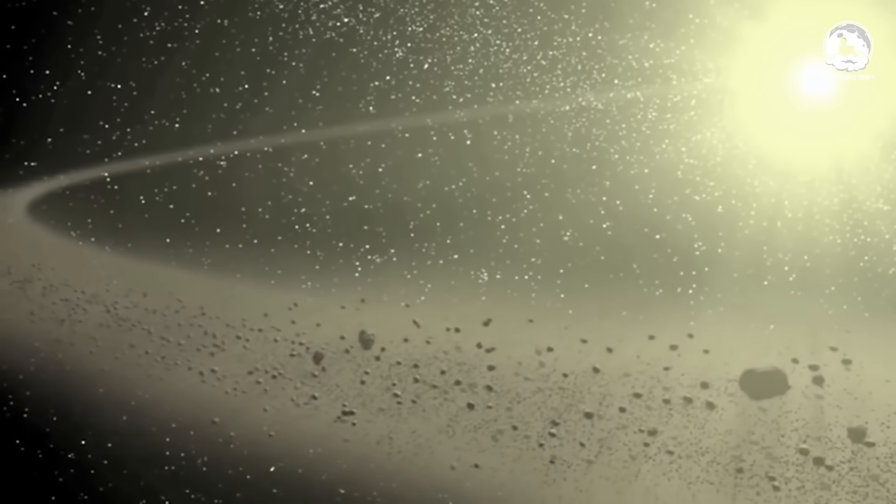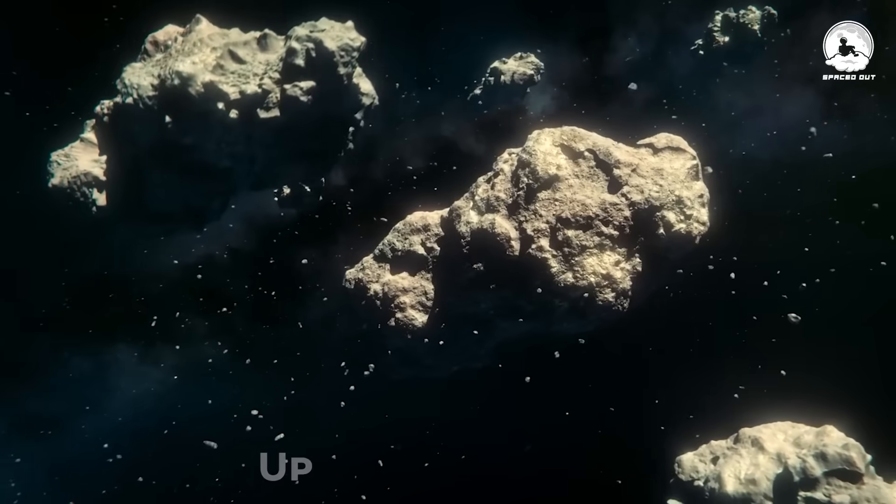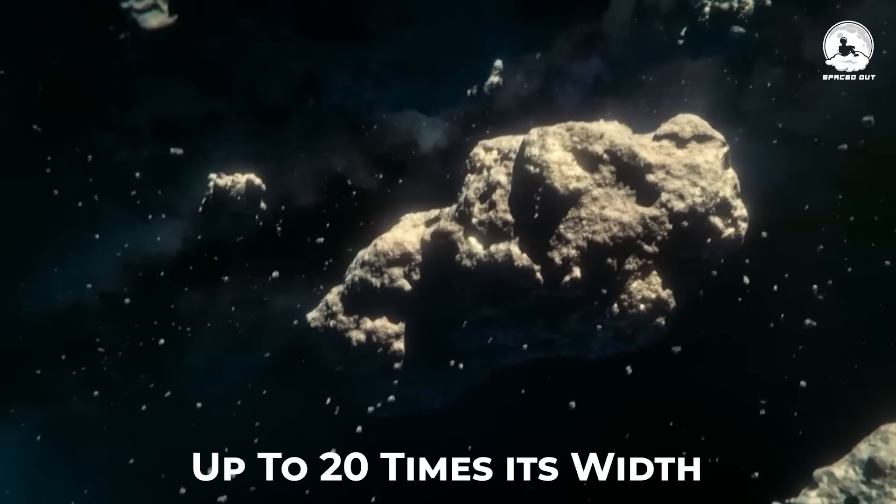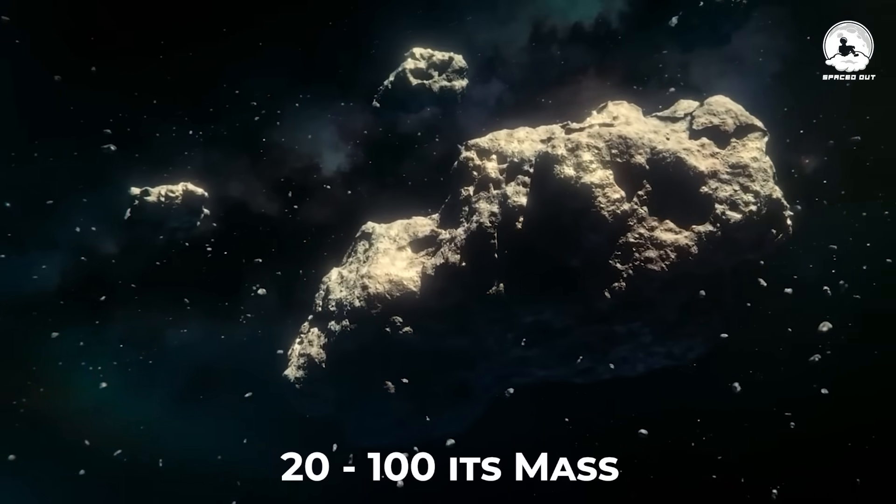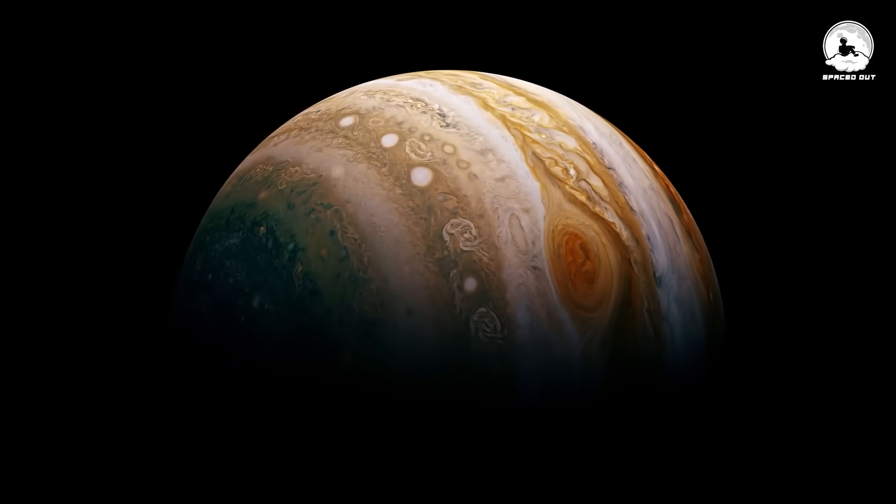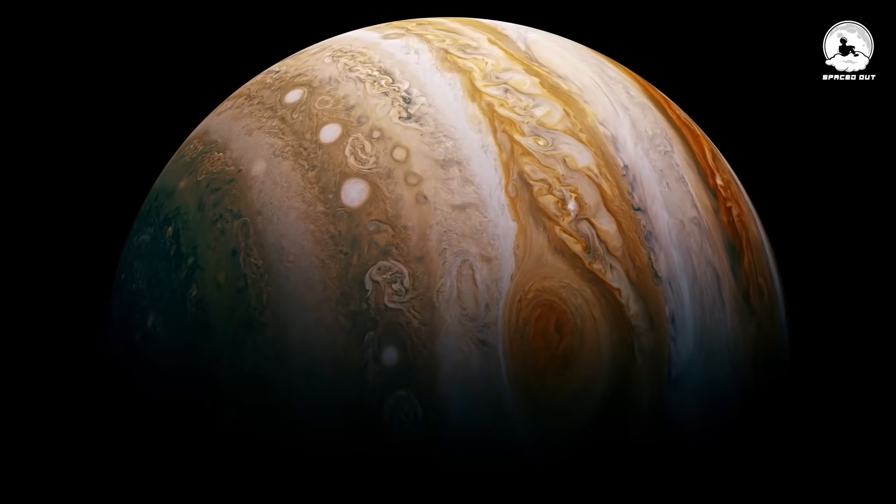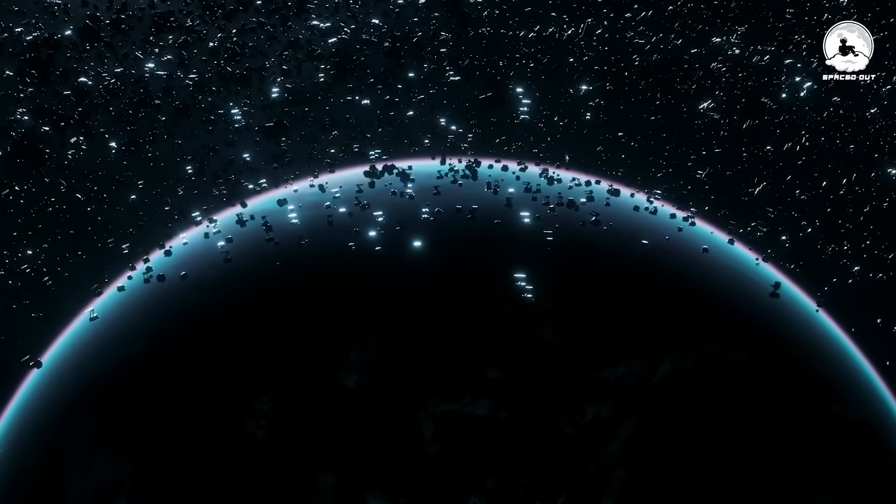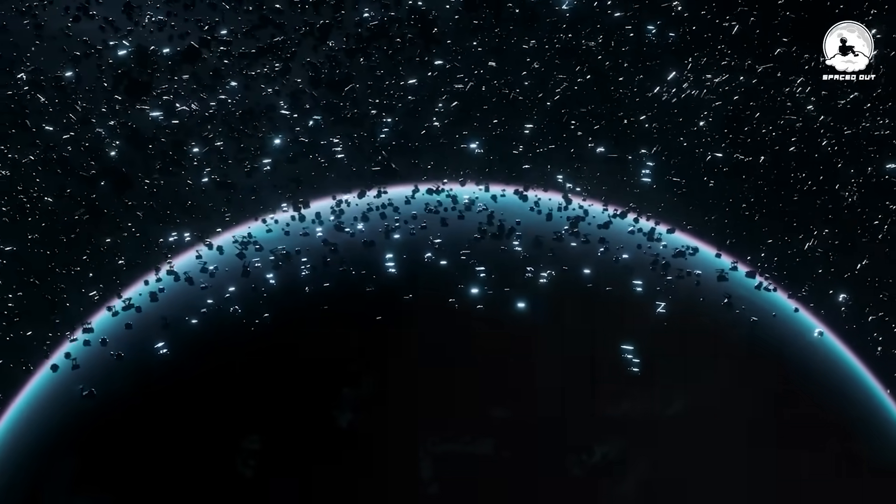The Kuiper Belt is similar to the main asteroid belt, although far larger, up to 20 times its width and 20 to 100 times its mass. Just like the main asteroid belt, which is shaped by the orbit of the giant planet Jupiter, the Kuiper Belt is shaped by the orbit of Neptune.